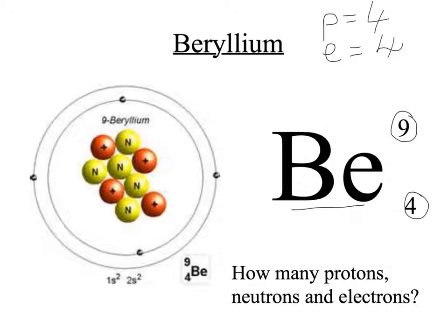To get the neutron number, we do mass number minus proton number, which gives us five. So in this example, beryllium has five neutrons. Four plus five is nine. So four protons, four electrons, and five neutrons.